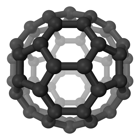Silicon monosulfide is a chemical compound of silicon and sulfur. The chemical formula is SiS. Molecular SiS has been detected at high temperature in the gas phase. The gas phase molecule has a Si-S bond length of 192.93 pm; this compares to the normal single bond length of 216 pm, and is shorter than the Si=S bond length of around 201 pm reported in an organosilane thione.